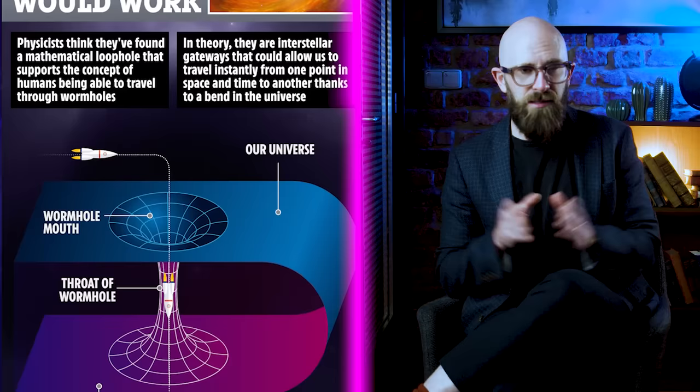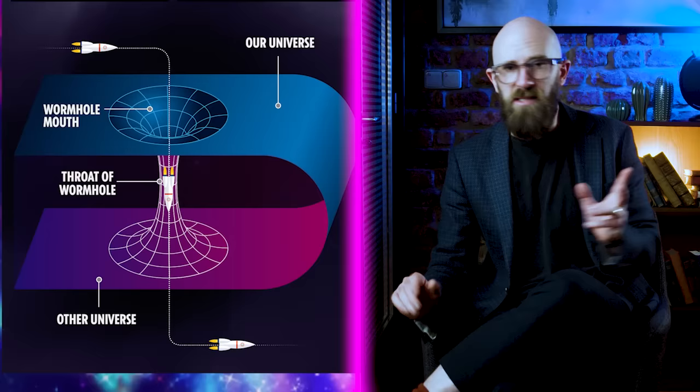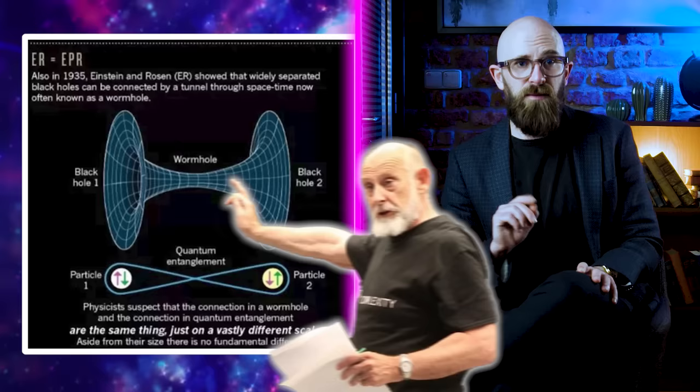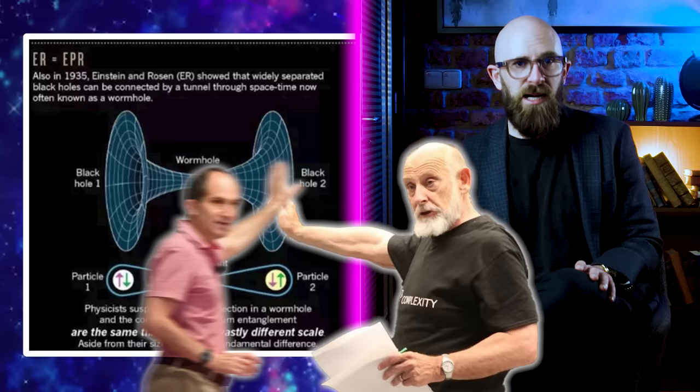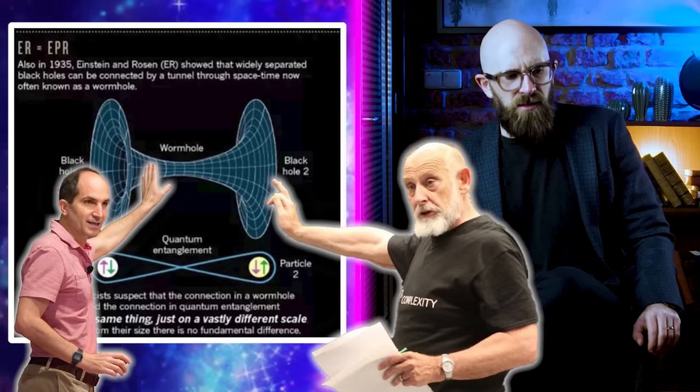One such theory is the ER equals EPR conjecture. This was proposed in 2013 by American physicist Leonard Susskind and Argentine physicist Juan Maldacena. And the conjecture's name is completely self-explanatory—at least it is if you happen to know what those abbreviations mean. ER refers to the Einstein-Rosen bridge, and the EPR is the Einstein-Podolsky-Rosen paradox.